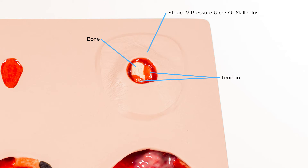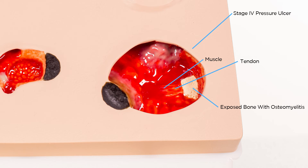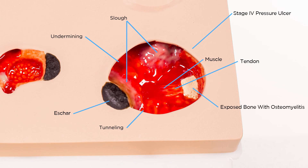This wound shows that a stage 4 wound does not necessarily need to be deep or large in size. The final wound is a large stage 4 pressure ulcer displaying exposed bone with osteomyelitis, tendon, muscle, eschar, slough, undermining and tunneling.